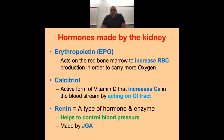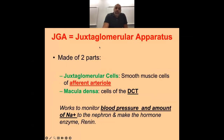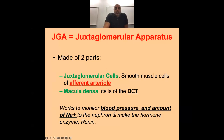Calcitriol: when the kidney releases this, it's because it needs calcium. It increases calcium absorption by working on the GI tract so we can absorb it from our diet. Then renin — this controls blood pressure. When the kidney sees high osmolarity or low pressure, it starts to release renin, triggering a cascade of hormones.